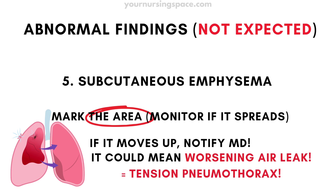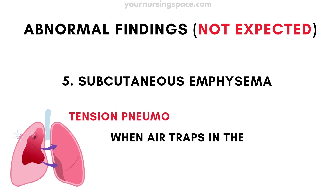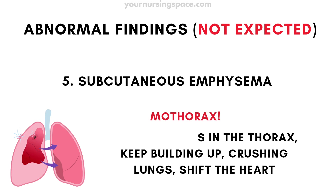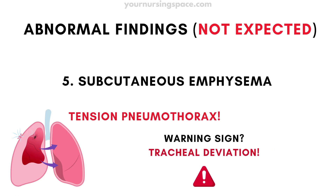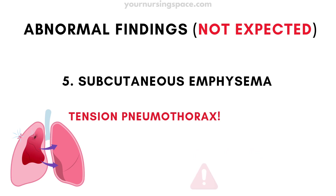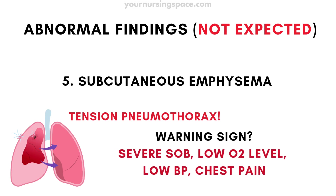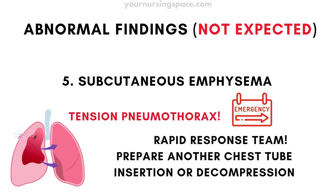Signs of a tension pneumothorax — the life-threatening emergency. This happens when air gets trapped in the chest and keeps building up, crushing the lung and shifting the heart. The biggest warning sign is tracheal deviation — the trachea (windpipe) shifts away from the affected side. Other signs include severe shortness of breath, low oxygen levels, low blood pressure, and chest pain. This is an emergency: call a rapid response and prepare for the doctor to insert another chest tube or perform needle decompression.